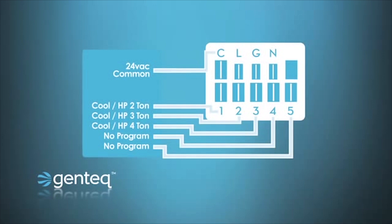Next we see an example of an air handler application which could be used on air conditioning or heat pump. And we again see that there are three taps programmed. Taps one, two, and three are programmed to work on two-ton, three-ton, or four-ton systems. But taps four and five again have no program.